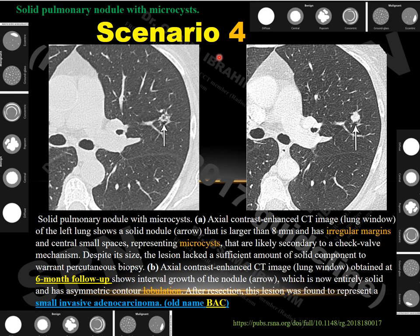Scenario 4: A solid pulmonary nodule in the left lung with surrounding ground glass opacity, central cystic areas, and air bronchogram — features suggesting possible malignancy. At six-month follow-up, the solid component increased with irregular and spiculated outlines and irregular margins. Biopsy confirmed small invasive adenocarcinoma. This illustrates the importance of guidelines in following up suspicious nodules to detect malignancy before spread or metastasis.